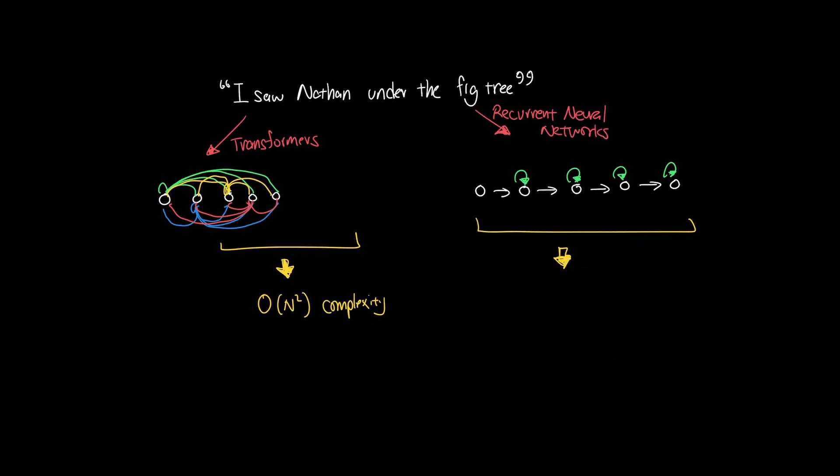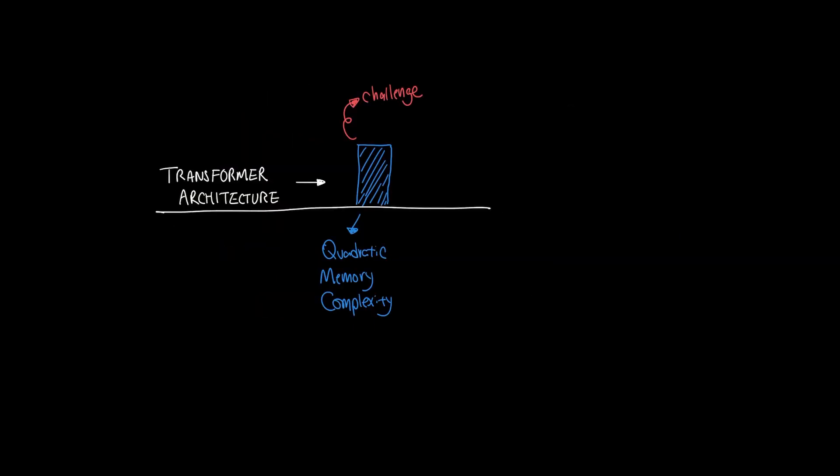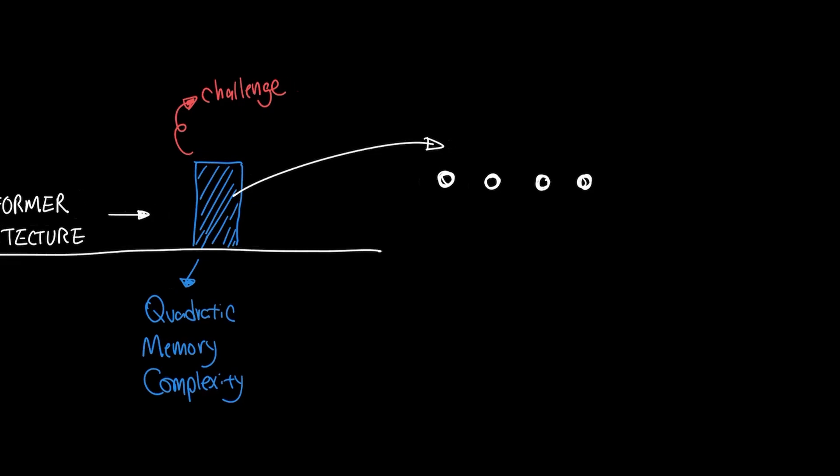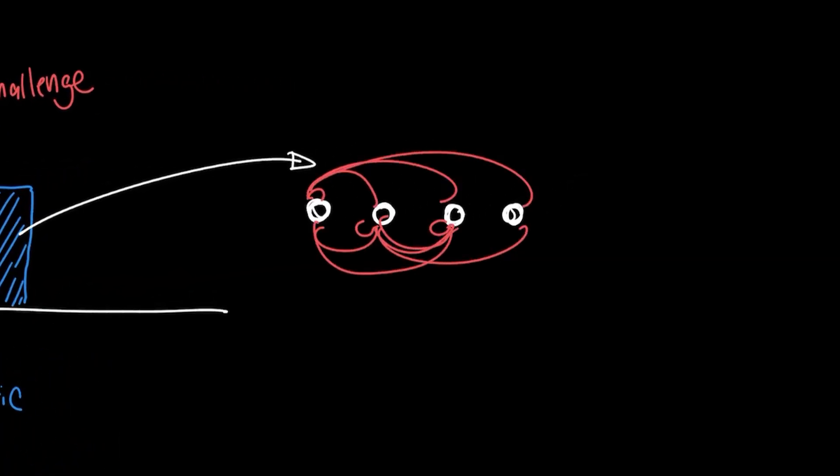On the other hand, Recurrent Neural Networks that we saw earlier scale linearly in compute, meaning that doubling the sentence size equally doubles space needed to store that information. Going back to Transformers, maybe you might be thinking, this seems like overkill to have pairing for every single word in the entire input.